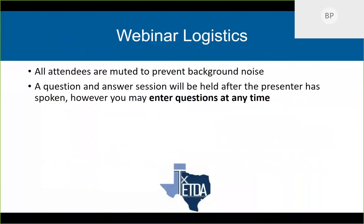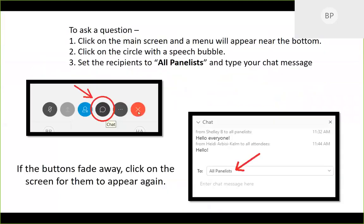A few logistical notes: all attendees should be muted to prevent background noise. We are going to have time at the end for Q&A, and you can enter questions at any time. Click on the screen to bring up the panel of buttons, then click on the circle with a speech bubble, make sure the recipients are set to all panelists, and then type your chat message.